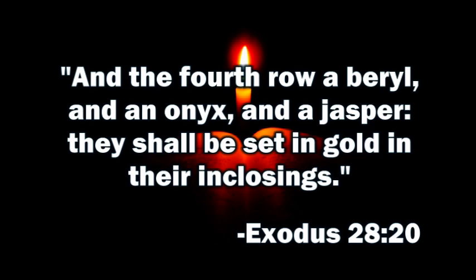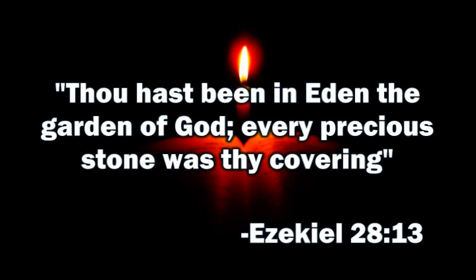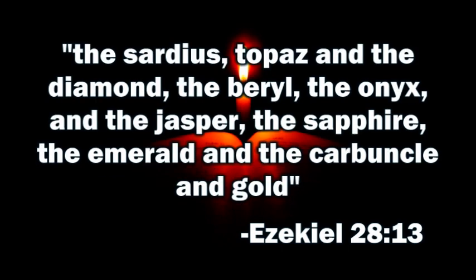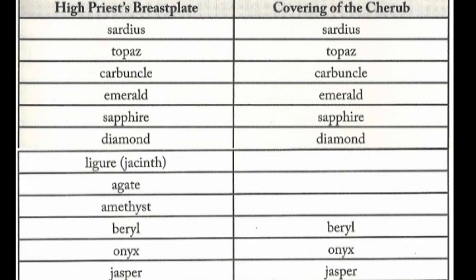Now notice the anointed cherub's covering gemstones — lacking three. 'Thou hast been in Eden, the garden of God; every precious stone was thy covering: the sardius, topaz, diamond, beryl, onyx, jasper, sapphire, emerald, carbuncle, and gold. The workmanship of thy tabrets and of thy pipes was prepared in thee in the day that thou was created.'